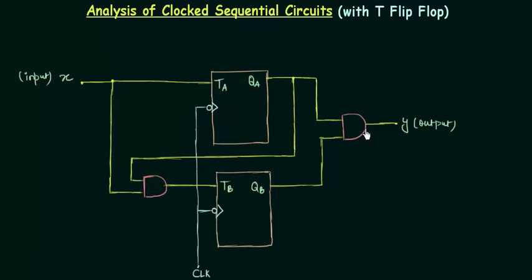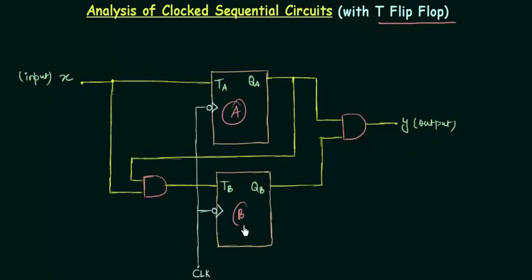We have already completed the analysis of clocked sequential circuits with D flip-flop and with JK flip-flop. Now we are going to do the analysis with T flip-flop, and this is the last lecture in this analysis part. On your screen you can see the circuit having two T flip-flops, let's say A and B.